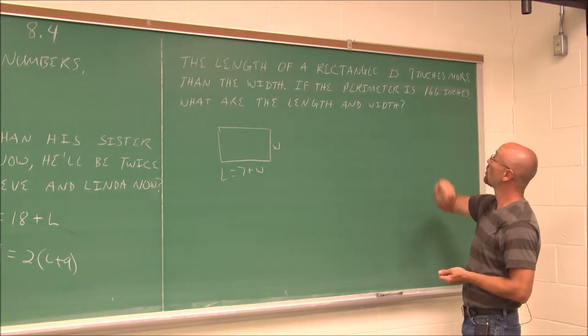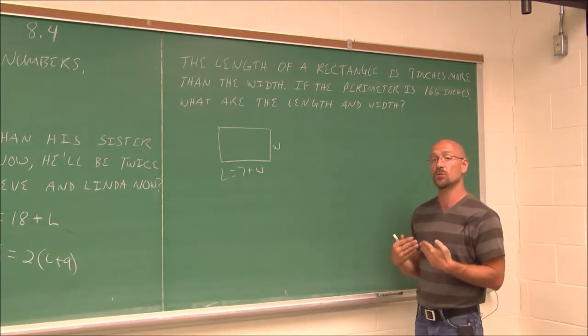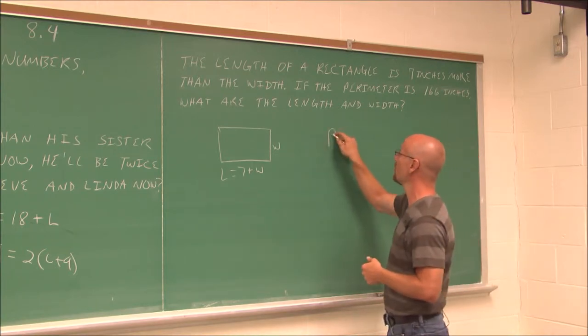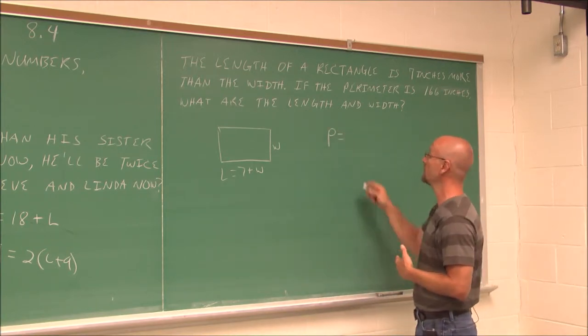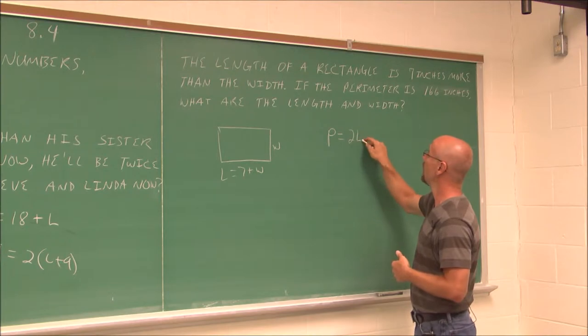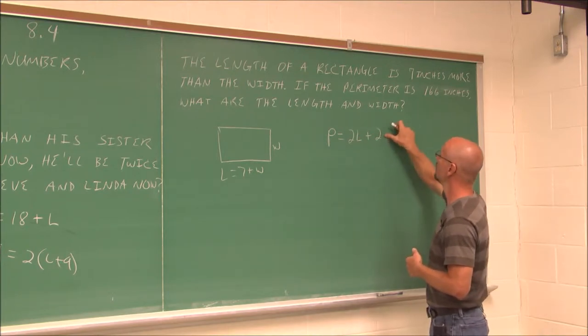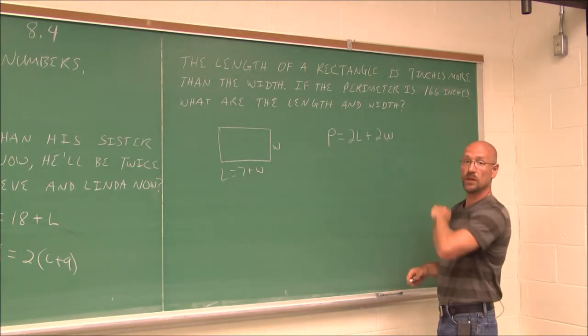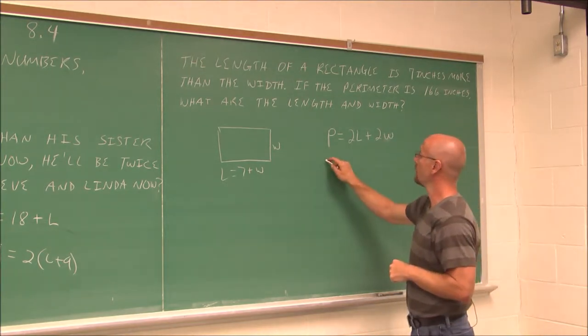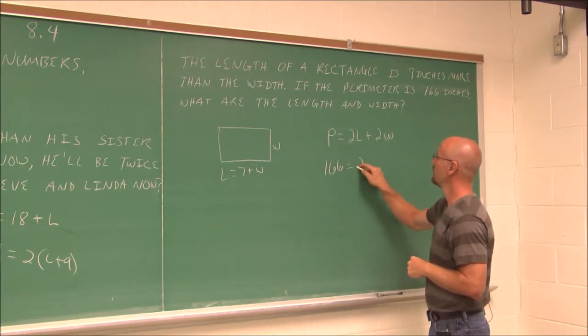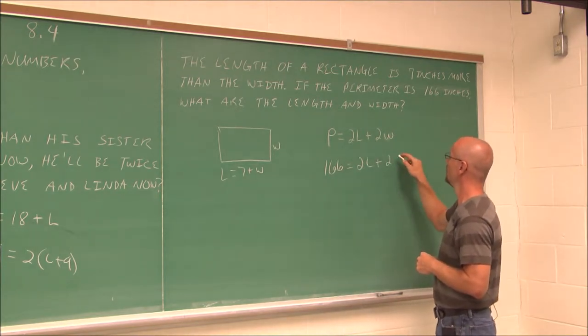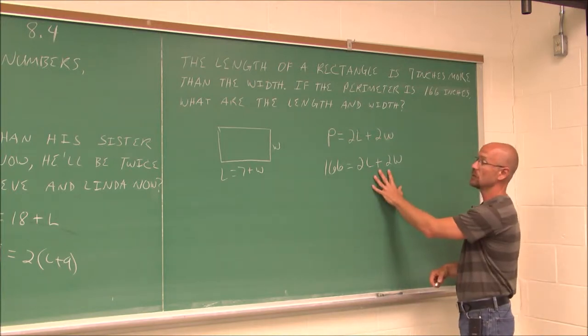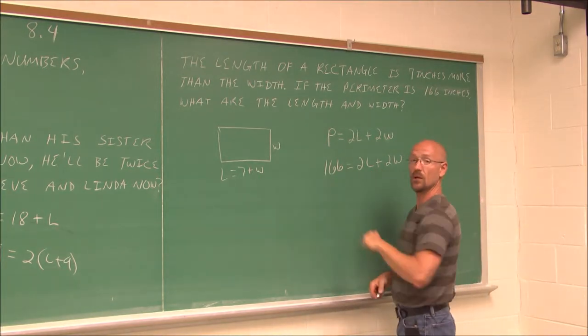It says, if the perimeter is 166 inches, this is where we have to recall how do we find the perimeter. Well, if we recall the formula for finding the perimeter of a rectangle, it's two l's plus two w's will give us that perimeter. So now let's just put in the information we know. The perimeter is 166 inches equals two l's plus two w's. So we have this equation. So we actually have two equations with two variables.